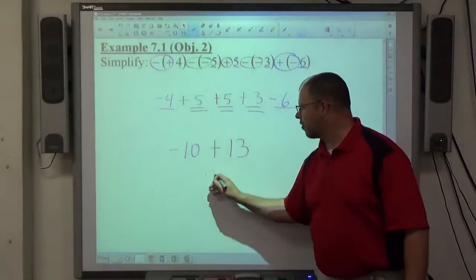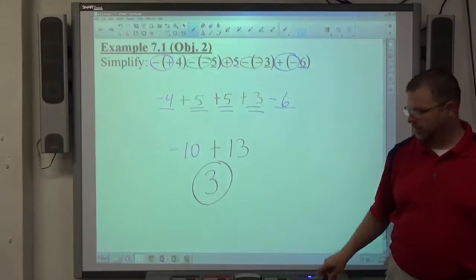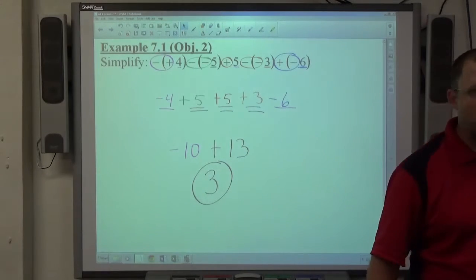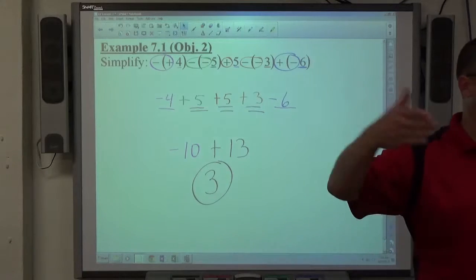Opposite signs subtract. 13 is bigger, so that's positive. I just did 13 minus 10. That is fine also. You can do the positive sum first, the negative sum second.